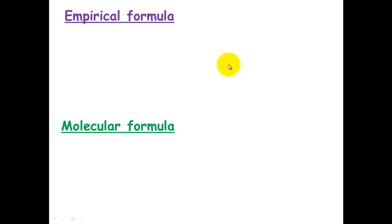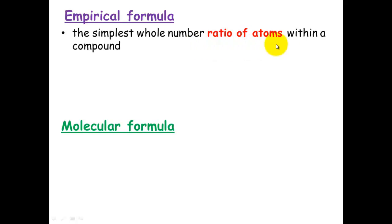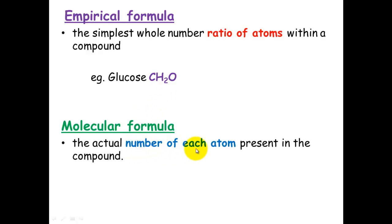Empirical formula is the simplest whole number ratio of atoms within a compound. For example, glucose would be CH2O. This is in comparison to a molecular formula, which is the actual number of each atom present in the compound.